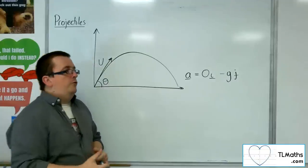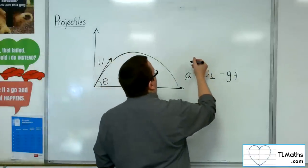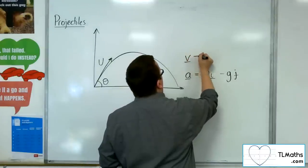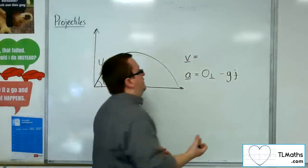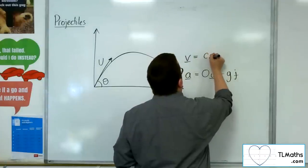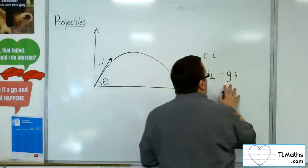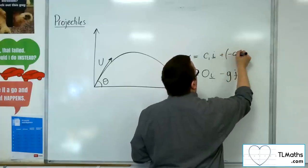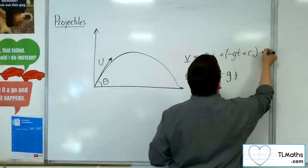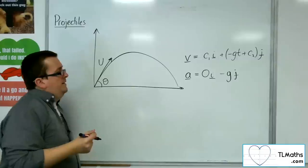Now, from what we know from before, we can integrate to get the velocity. Now, zero will integrate to just a constant value. So let's call that c1 i. And the g will integrate to, well, let's put in plus minus gt plus another constant value, c2 j.